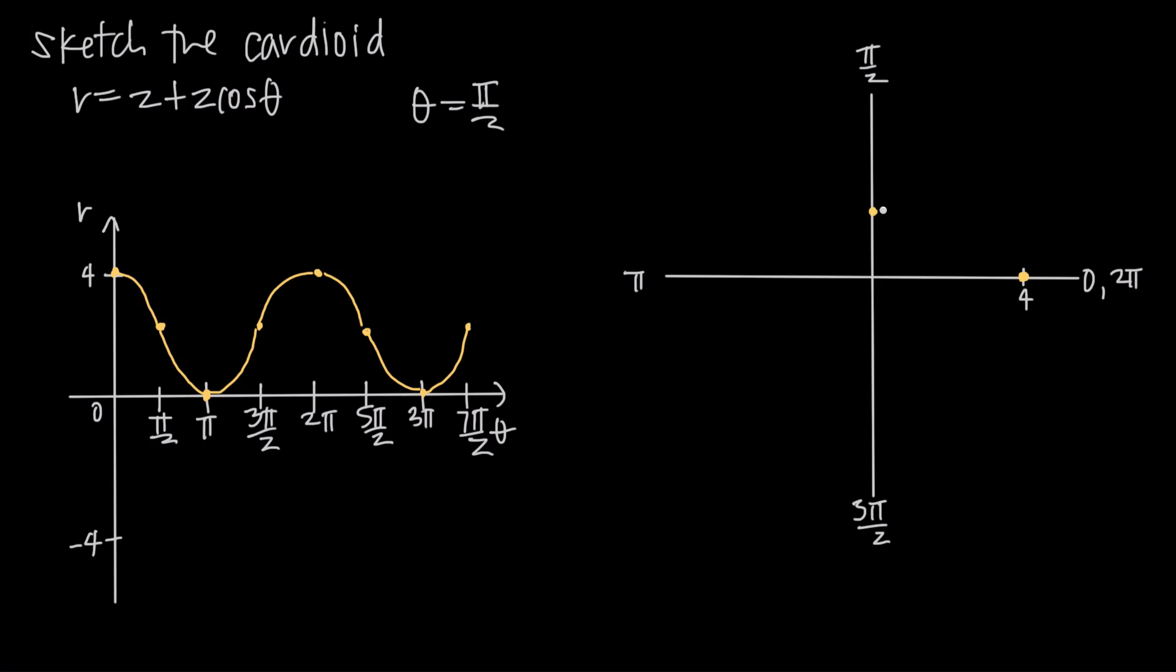Then as we head from pi over 2 down to pi, we get to a distance of 0, which means we're going to be right at the origin. So as we head from pi over 2 down to pi, we're going to curl back and hit the origin here.